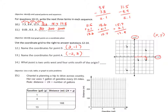Question 14 asks: what point is 2 units west and 4 units south of the origin? The origin is point (0, 0). Going 2 units to the west means moving left to x equals −2, then 4 units south means moving down 4 units. That lands us on point E.